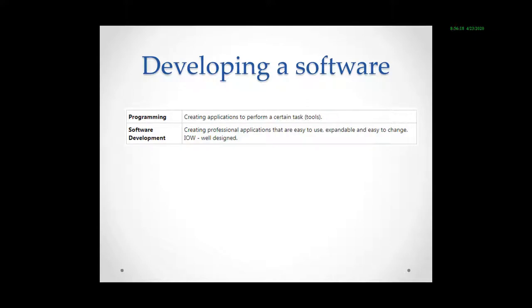Developing a software is about writing a program with its graphical user interface and which can be installable in all kinds of operating systems. Whereas a computer program is about to solve a certain task by writing codes.